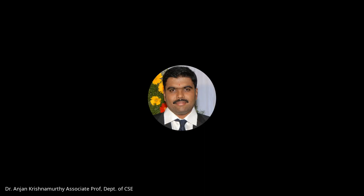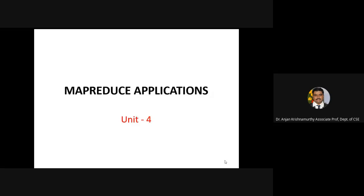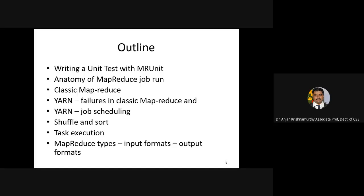Unit 4 is titled 'MapReduce Application.' The outline includes: writing a unit test case with MRUnit — MRUnit is a debug test unit, similar to testing software like JUnit or Selenium but for MapReduce applications. Also covered are the anatomy of the MapReduce job run, classic MapReduce failures, job scheduling done in YARN, shuffle and sort, task execution, MapReduce types, and input/output formats.